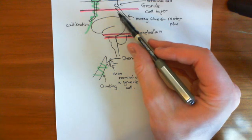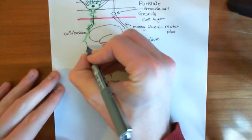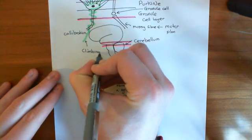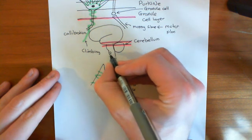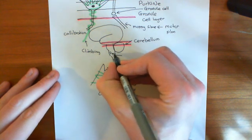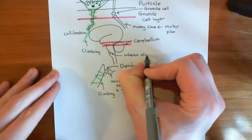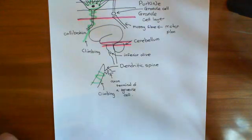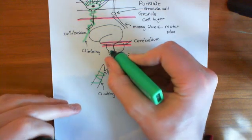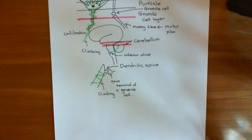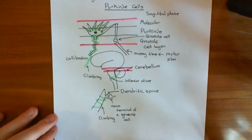The mossy fibres are the ones bringing the information in from the cerebral cortex - those are the ones that synapse with the granule cells. The climbing fibres do not come from the cerebral cortex; they come from the inferior olive of the medulla. On either side of the medulla you have a little portion known as the inferior olive, and this is where the climbing fibres come from. These climbing fibres come into the cerebellum through the inferior cerebellar peduncle and then go up to the cerebellar cortex.